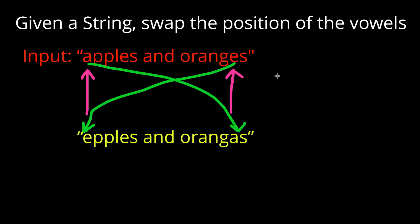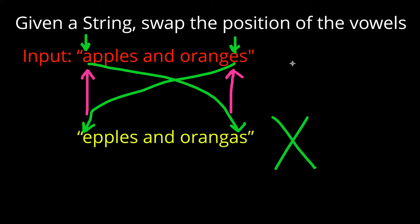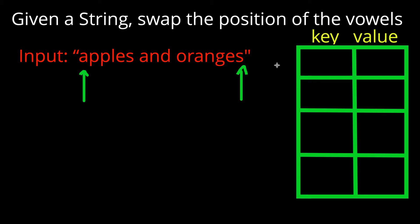Depending on the language you're using, swapping these vowels is going to be a bit tricky — here's where the trick comes in. In most languages strings are immutable, which means you cannot edit characters in place. I can't simply change this A into an E and swap it easily. For languages like C that would work, but for Python we can't do this in place, which means we're going to have to use extra auxiliary memory and an extra data structure to track where the swapped vowels will end up, so we can reconstruct and return the new string.